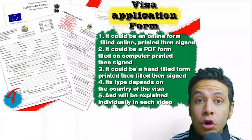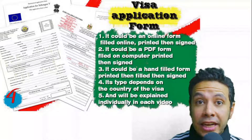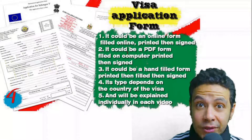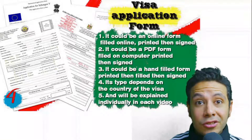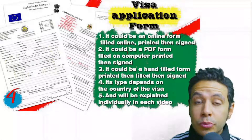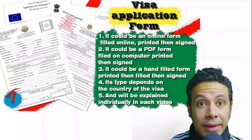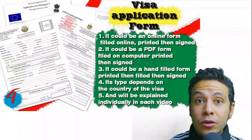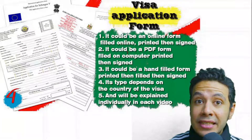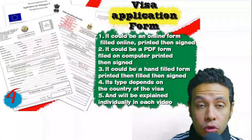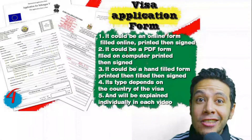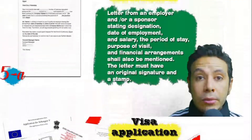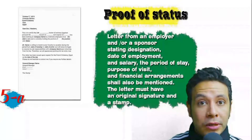For the visa application form, in general you need only one copy, but sometimes you may be required to submit two or even three copies. Forms are different from country to country. In general you should print it and fill it manually, but many countries now provide their application form on an online platform where you can fill it online, then print and sign it.